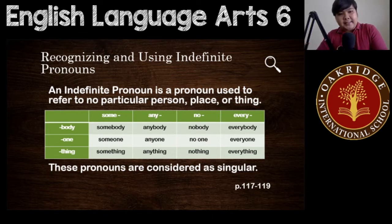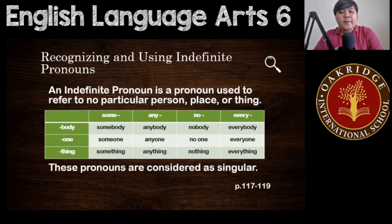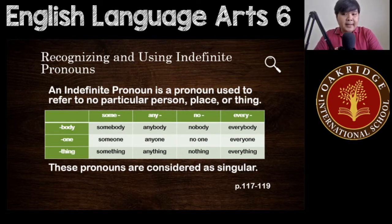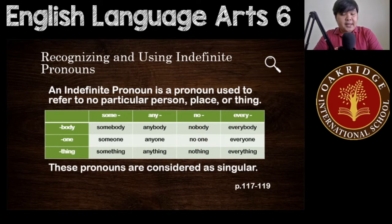These are very common examples of indefinite pronouns — the ones you see on the screen right now. We have combinations of the words some, any, no, and every with the words body, one, and thing. Examples: somebody, someone, something, anybody, anyone, anything, nobody, no one, nothing, everybody, everyone, everything.